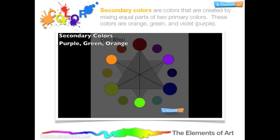Secondary colors are created by mixing equal parts of two primary colors. These colors are orange, green, and violet. Red and yellow will give you an orange. Blue and yellow will make green, and blue and red make violet.